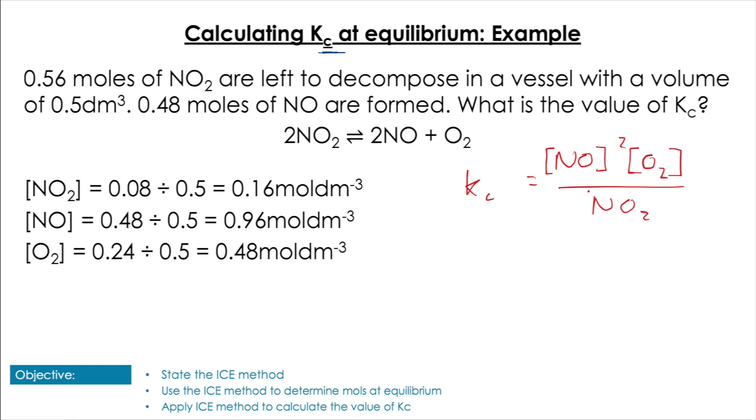Plugging in the values: (0.96)² × 0.48 all over (0.16)² gives us 17.28, which is our value for Kc.